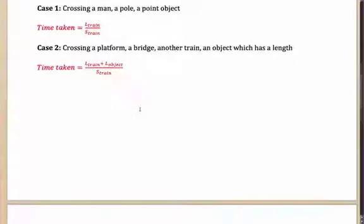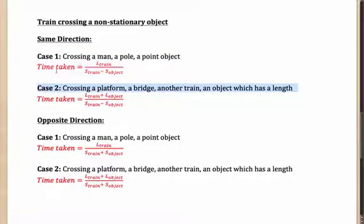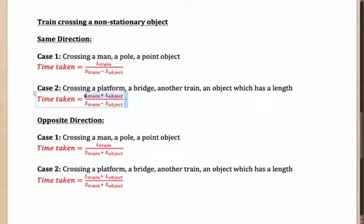When the train is crossing a non-stationary object, there are two sub-cases: same direction or opposite direction. Here you need to know relative speed. When moving in the same direction, the time taken depends on the length to be covered — just the train's length for a point object, or the train's length plus the object's length for an extended object. The speed used is the relative speed, which is the speed of the train minus the speed of the object when they move in the same direction.